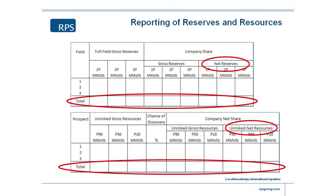So let's get on to the reporting. Here's an example of what a good report should look like. The top table is how we might report the reserves. The bottom table is how we might report prospective resources, undiscovered resources. And you can see I haven't tried to mix the two together, which is again a no-no under the rules.